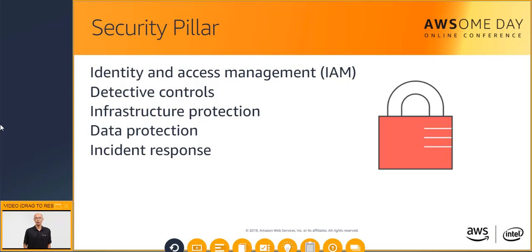With data protection, there are numerous approaches and methods to consider, including data classification, encryption, protecting data at rest and in transit, data backup, replication, and recovery when needed. Even with all the preventive and detective measures in place, organizations should still create an incident response process to respond to and mitigate any potential security incidents. Incident response is designed to keep your architecture updated to accommodate a timely investigation and recovery.